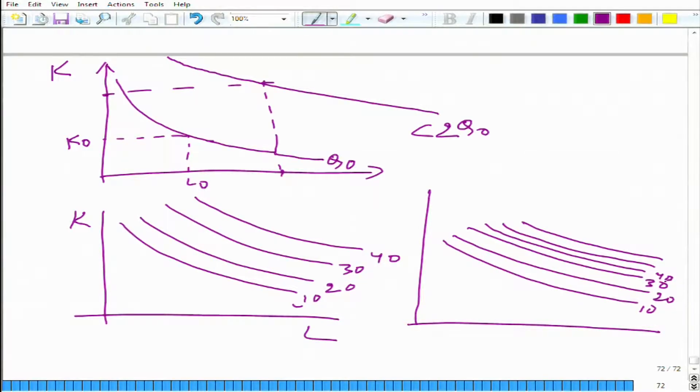So what is happening here in constant return to scale? From this point, if we are moving here we need to double to find a corresponding point.